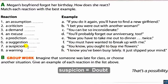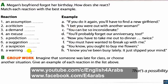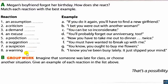Number seven — suspicion, meaning doubt: B. 'I bet you were out with another woman.' 'I bet' means I guess. Number eight — a warning: A. 'If you do it again, you'll have to find a new girlfriend.' A warning means to tell someone about a possible negative consequence.